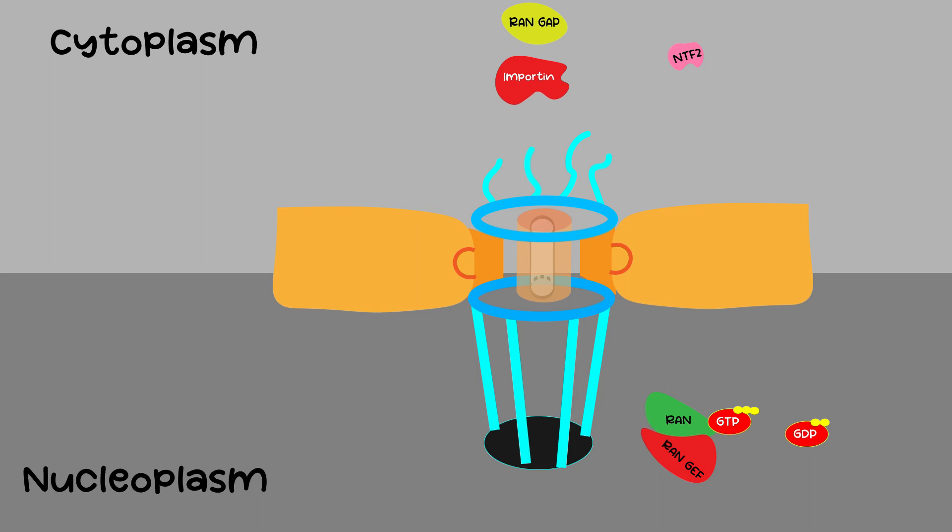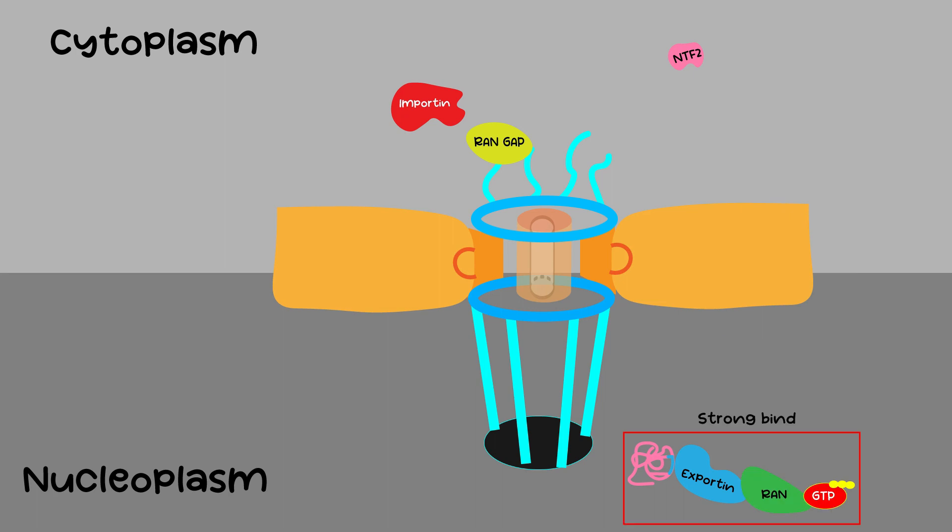Now let's talk about export from the nucleus to cytoplasm. Proteins targeted for export are marked by a specific sequence of amino acids called the nuclear export signal. They're recognized by a receptor called exportin and bind with RAN-GTP to form a stable complex.